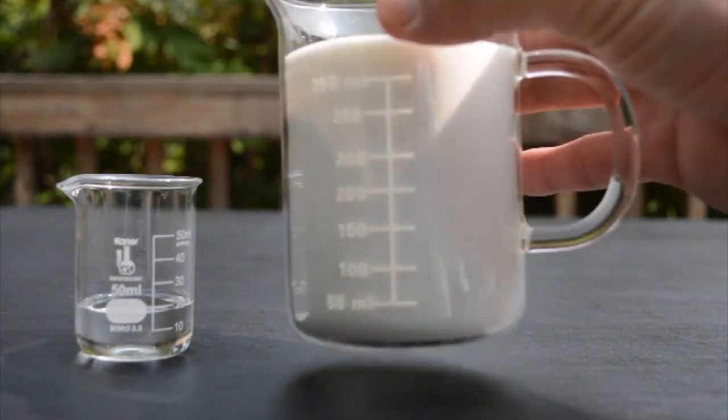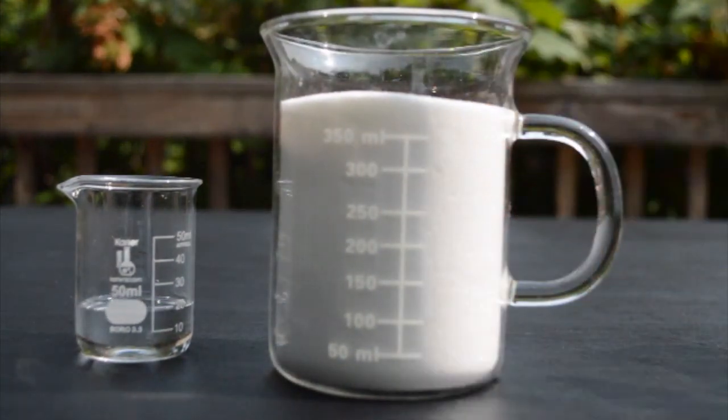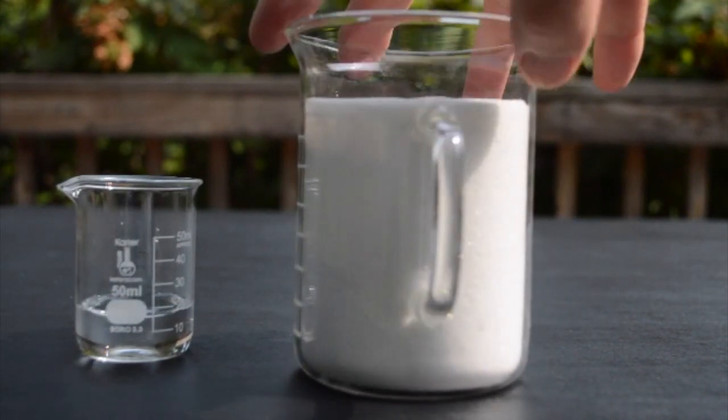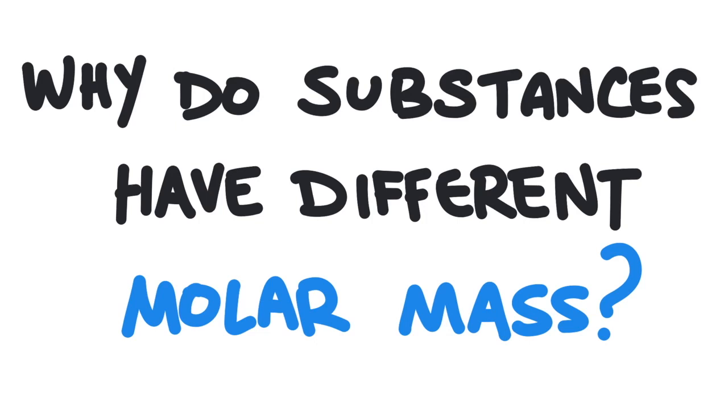This is a mole of water and this is a mole of sugar. Both of these samples contain the same amount of molecules, but why do they look like different amounts? In this video, we will investigate why substances have different molar masses.